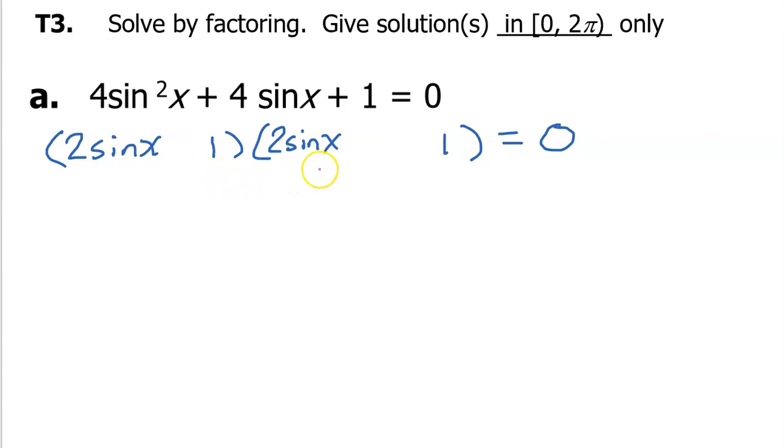Inner plus outer equals middle. Here's what I mean by that. Inner, I'm talking about these two terms right here. I multiply these. Inner, I have 2 sine x. Outer, now I'm talking about these two terms. I'm multiplying again. Okay, that will be 2 sine x.